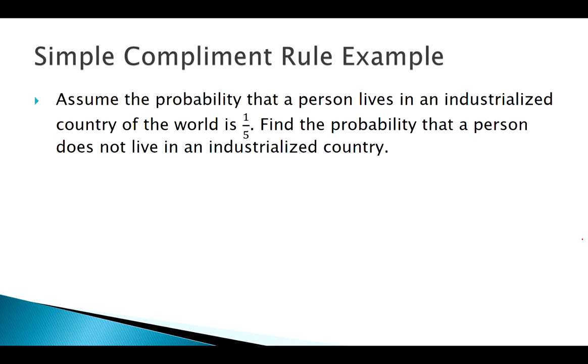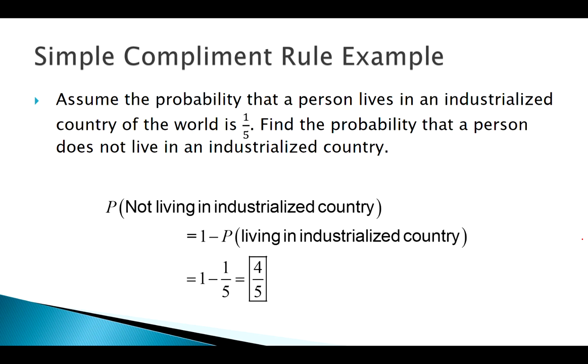The probability that somebody lives in an industrialized country is one-fifth. Find the probability that they do not live in one. Simply apply the complement rule, and we can say, just randomly choosing a person in the world, there's a four in five chance they're not in an industrialized country. That probably seems super simple. Applying the complement rule by itself is extremely simple.